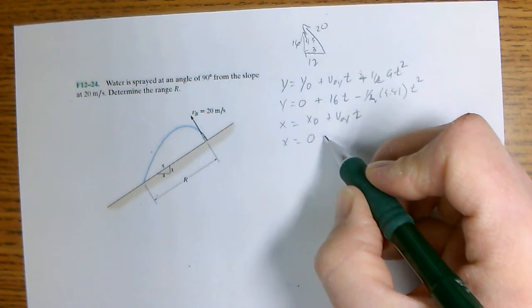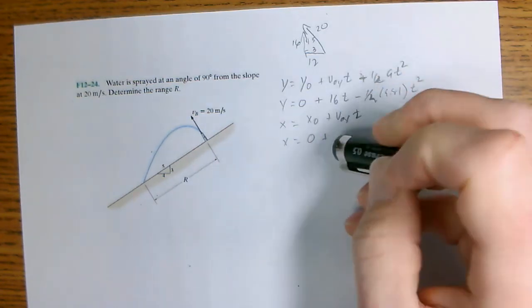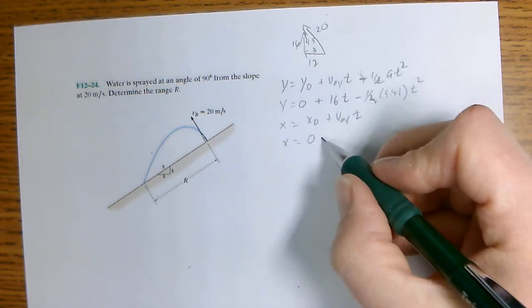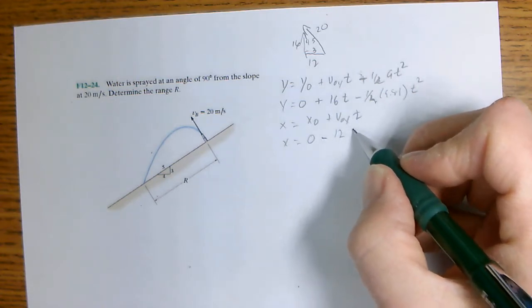Right? So that's zero plus, or minus because it's going that way, minus 12 T.